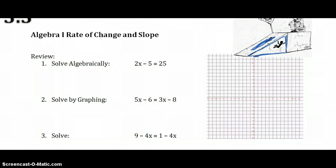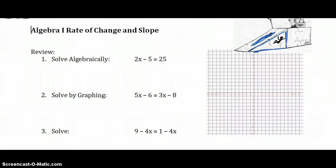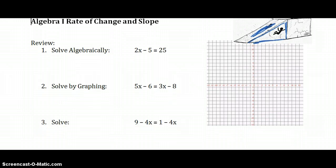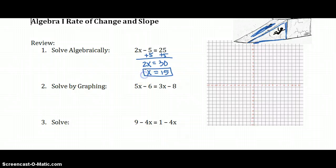But before we do that, let's make sure we can solve linear equations algebraically and by graphing. So to solve the first one, we'll add 5 to both sides, and 2x equals 30. We'll divide by 2, and x equals 15. So that's solving it algebraically.